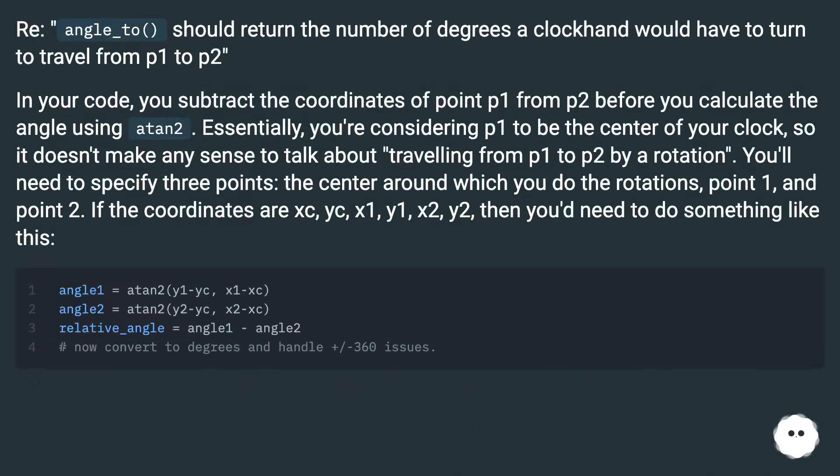angle_to() should return the number of degrees a clock hand would have to turn to travel from p1 to p2. In your code, you subtract the coordinates of point p1 from p2 before you calculate the angle using atan2. Essentially you're considering p1 to be the center of your clock, so it doesn't make any sense to talk about traveling from p1 to p2 by a rotation. You'll need to specify three points: the center around which you do the rotations, point 1 and point 2. If the coordinates are xc, yc, x1, y1, x2, y2, then you'd need to do something like this.